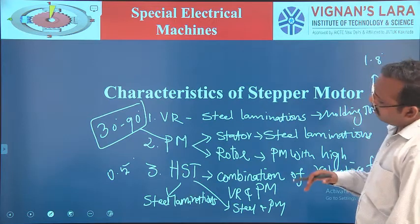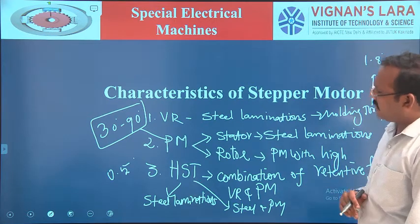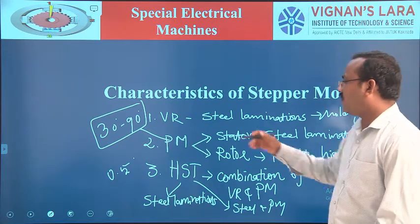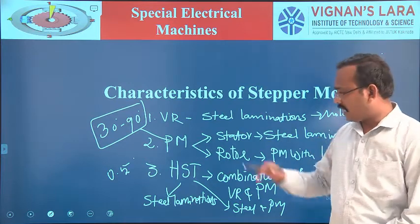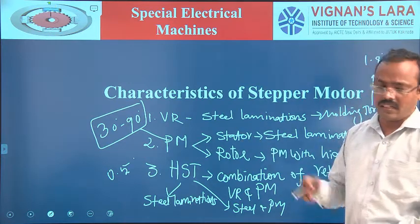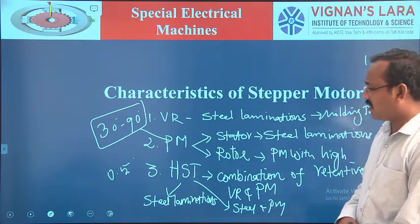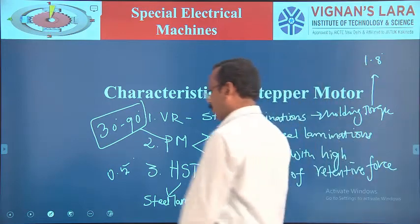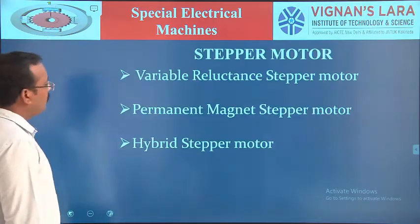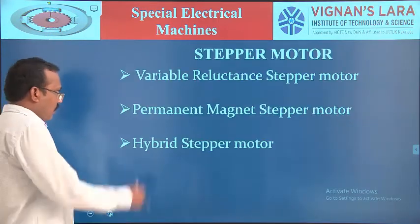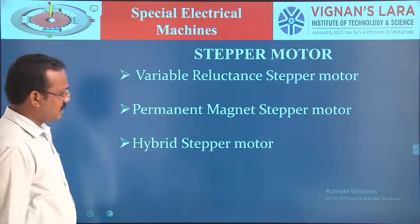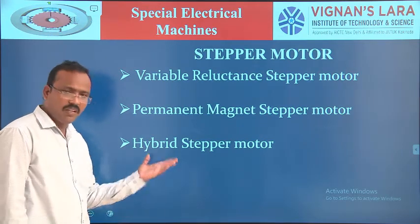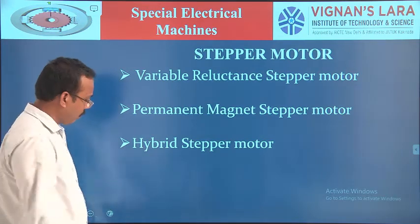Now, what we are going to study in this class is: what are the characteristics of these kinds of stepper motors? The three types are: variable reluctance stepper motor, permanent magnet stepper motor, and hybrid stepper motor.